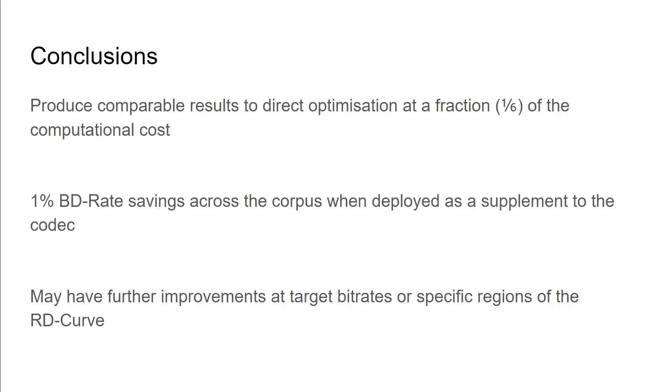The conclusions we can take from this: We were able to produce comparable results to the direct optimization techniques at a fraction of the computational cost. While we do incur some additional complexity by having the machine learning or deep learning techniques, just looking at the number of encodes, we have significantly decreased that.